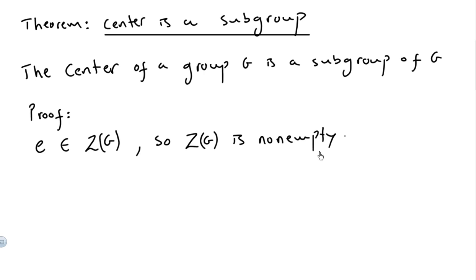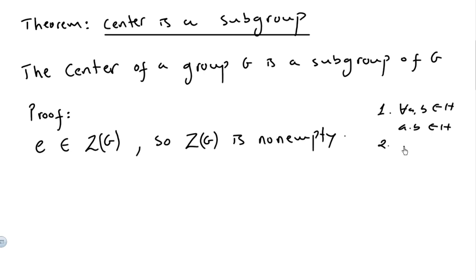Now that we know the center is non-empty, we are going to use the two-step subgroup test. If you remember, we take for all A and B in H and prove that AB is in H, and the second step is to prove that for all A in H the inverse is also in H. The identity is in the center, so the center is non-empty.